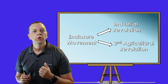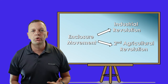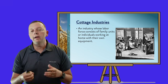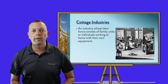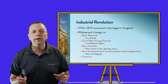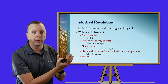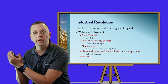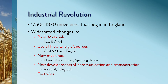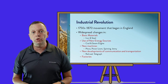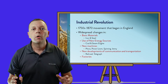The enclosure movement actually spawned two revolutions: the Industrial Revolution and the Second Agricultural Revolution. Before the Industrial Revolution, products were made at home in what is known as cottage industries — people would make things by hand at their home and then either use those products or sell them on the market. Starting in the 1750s through the 1870s, the Industrial Revolution changed all of this by taking that excess labor from people who no longer had farms and combining it with new technology. We started having basic materials such as iron and steel, new energy sources such as coal to create steam power, and different machinery such as plows, power looms, and spinning jennies. We also started developing new ways to communicate and travel, including the telegraph and the railroad. But most of all, we started having factories.